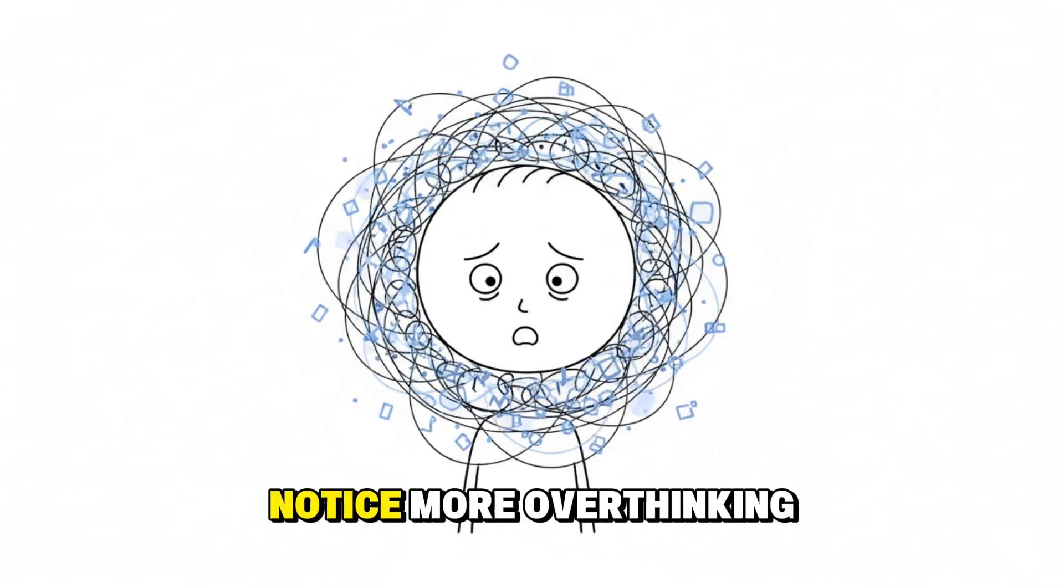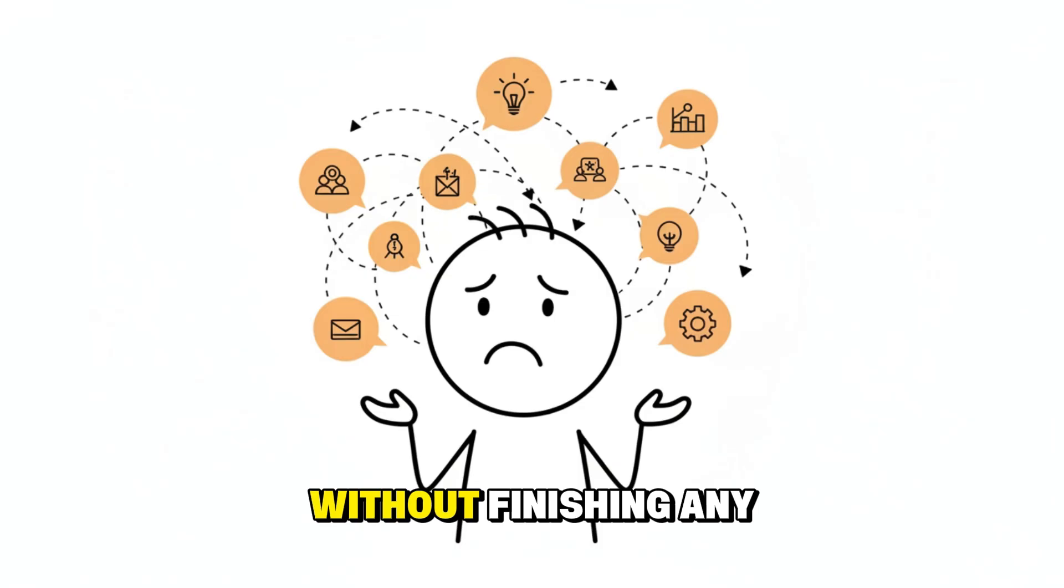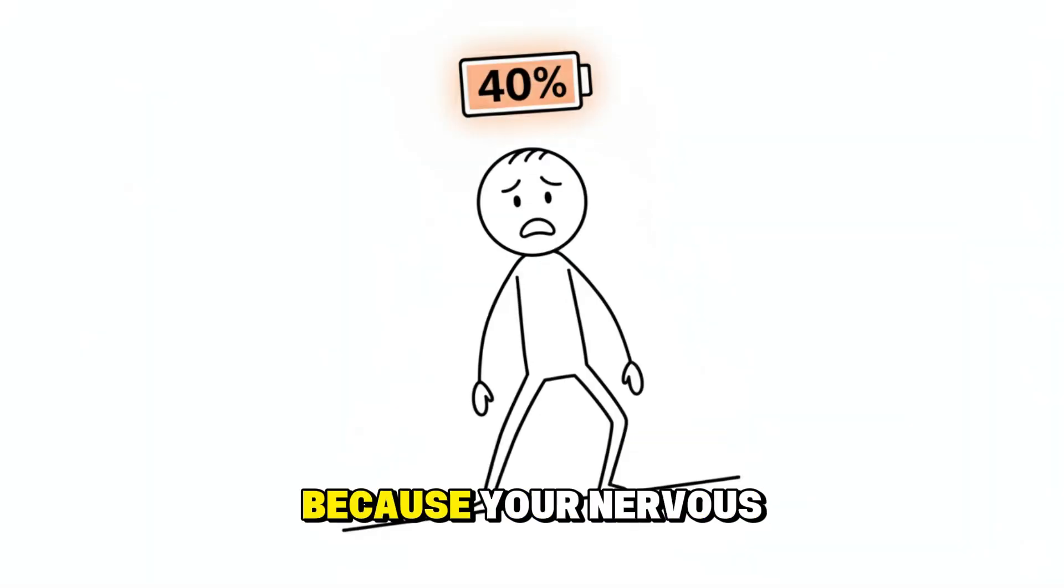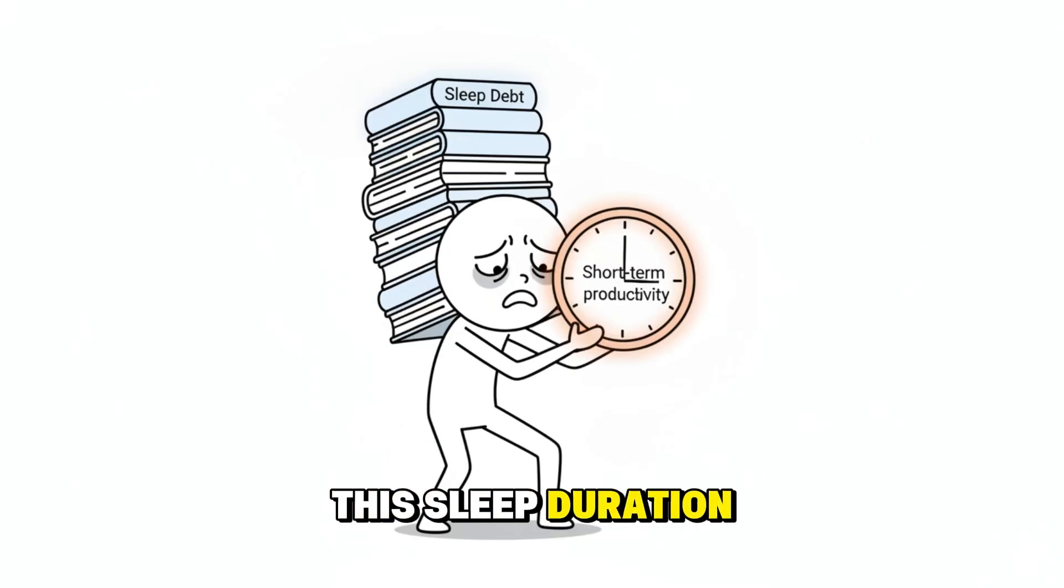Mentally, you may notice more overthinking. Thoughts loop. Your mind jumps between ideas without finishing any of them. Your brain struggles to form clean, logical connections, which makes decision-making more difficult. Emotionally, you become more sensitive to stress. You may feel irritation rise faster. Social interactions may drain you more than usual. It becomes harder to stay grounded because your nervous system is running on partial power. This sleep duration feels productive in the short term, but it silently increases sleep debt and emotional strain.